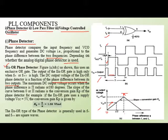If the XOR gate supply voltage is 5 volts, the conversion gain Kp is equal to 5 divided by π, which equals 1.59 volts per radian. This is the exclusive-OR type of phase detector, generally used when F-in and F-out are square wave signals.